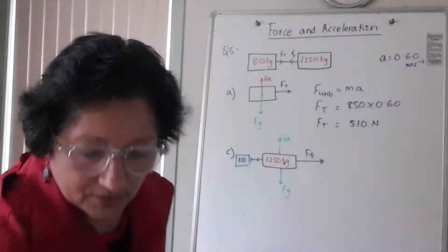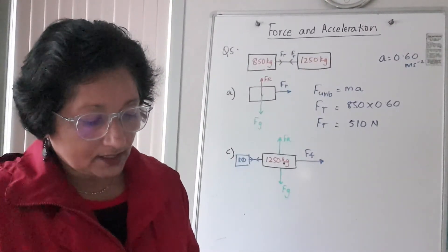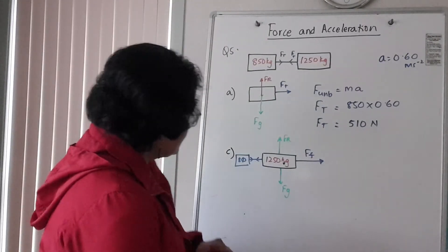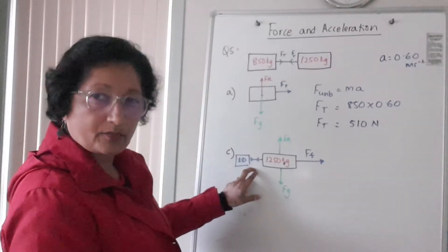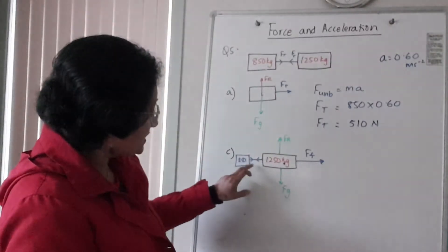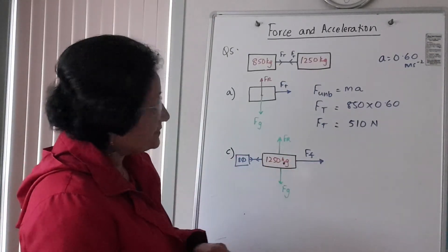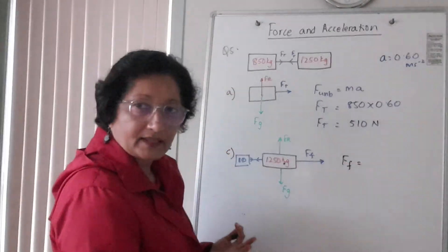So write a vector equation and calculate the forward force of the car's engine. So your unbalanced force, now the tension forces are equal and opposite, they kind of cancel each other over here. So your forward force is mass, your total mass times acceleration. So forward force, which is your unbalanced force, is your mass which is 1250 plus 850 times acceleration.